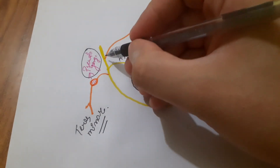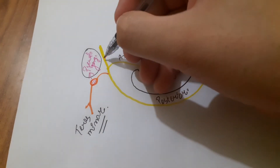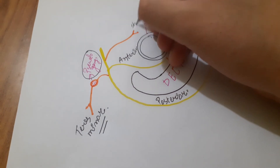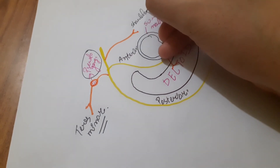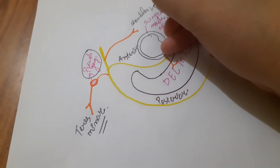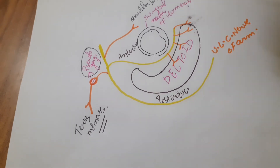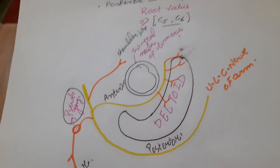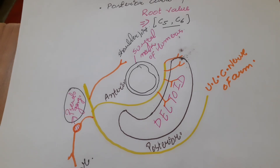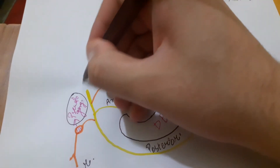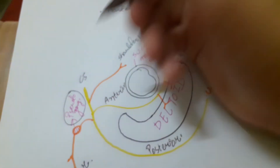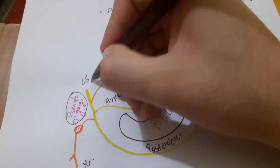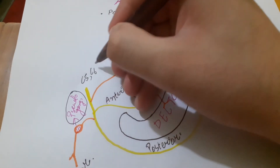From the main nerve trunk, a branch goes to the shoulder joint. The axillary nerve arises from the posterior cord of the brachial plexus and has root values C5 and C6.